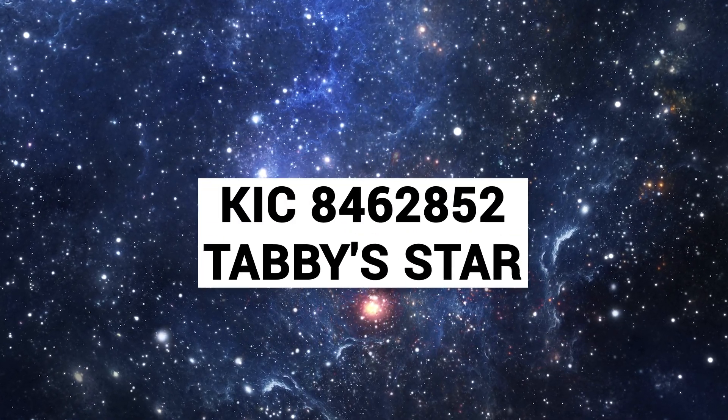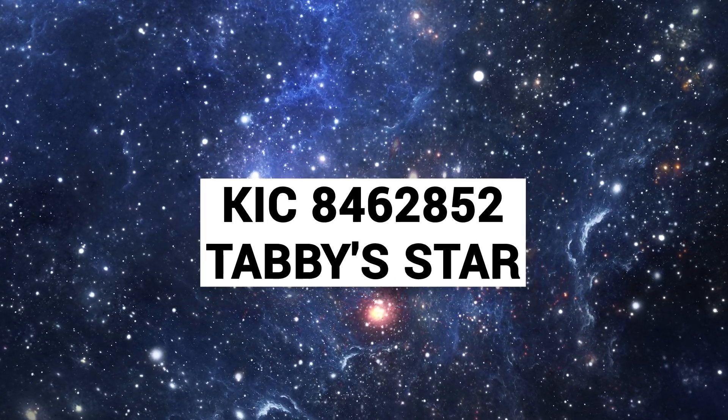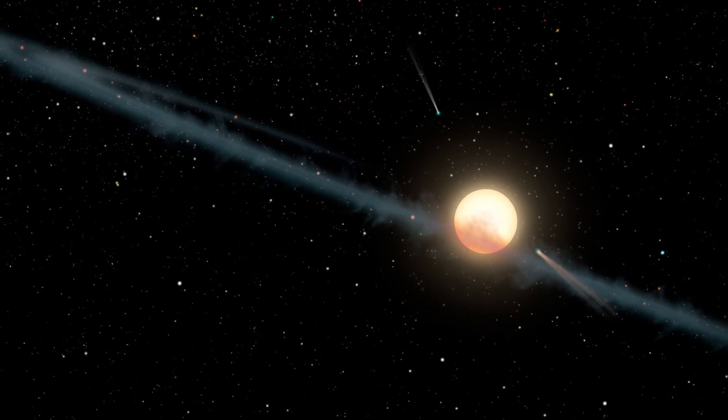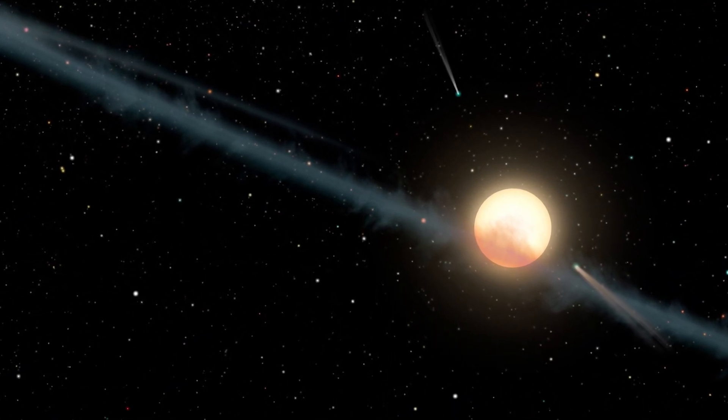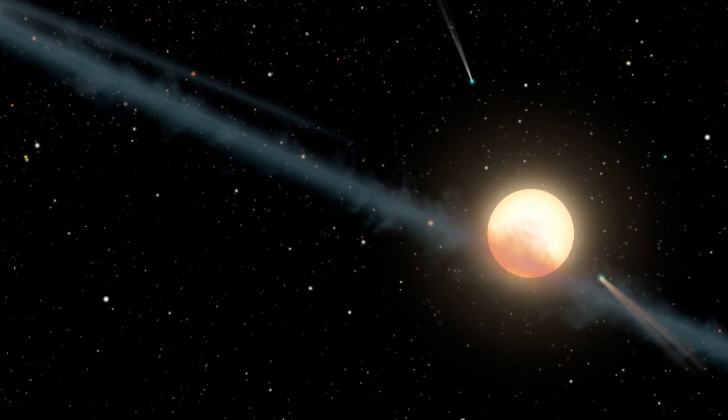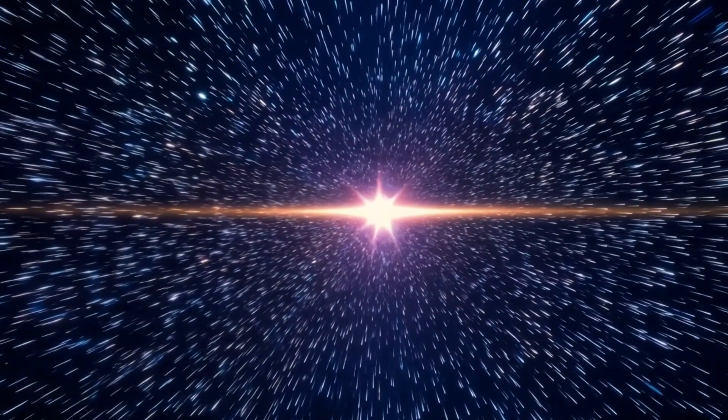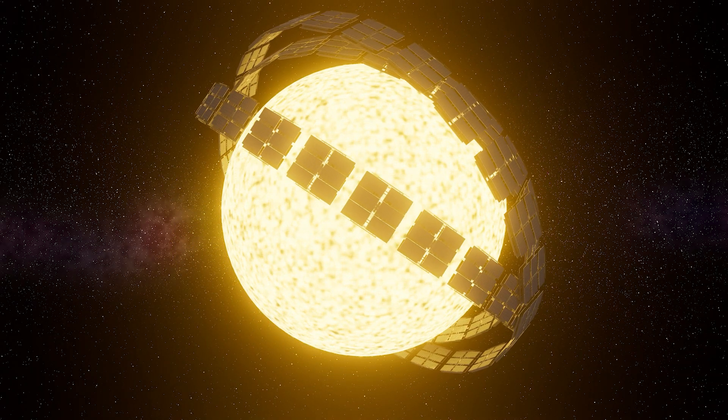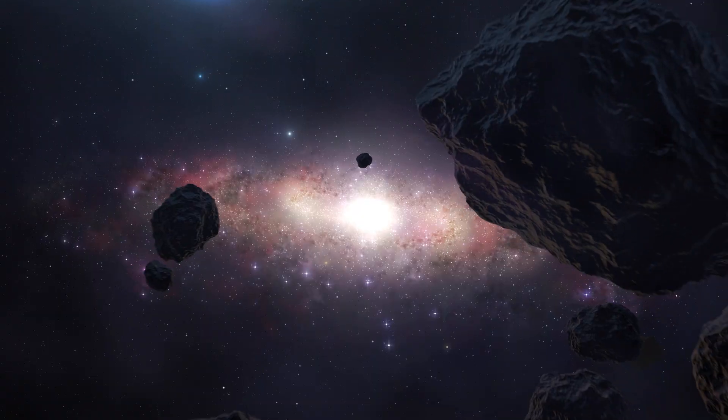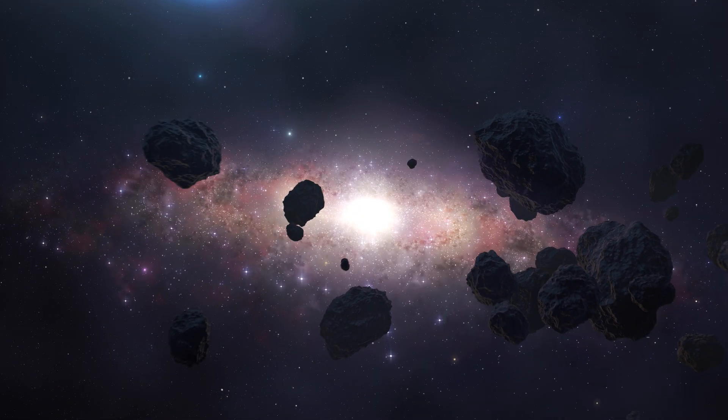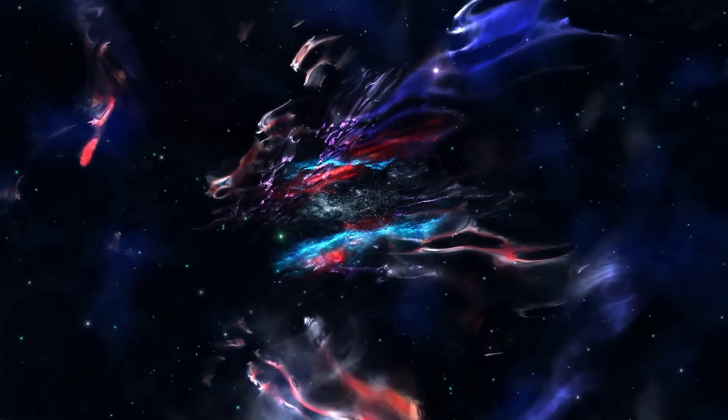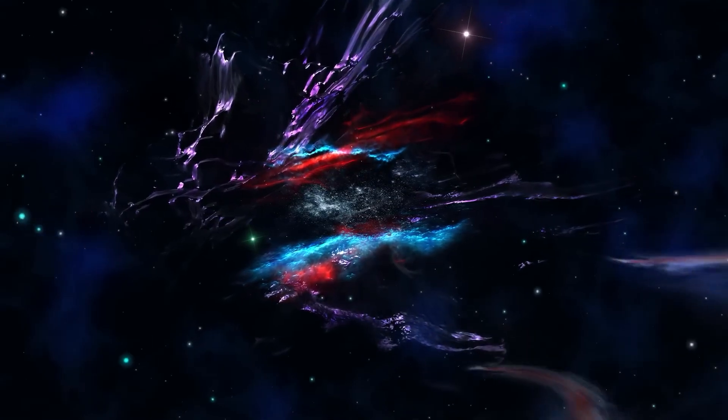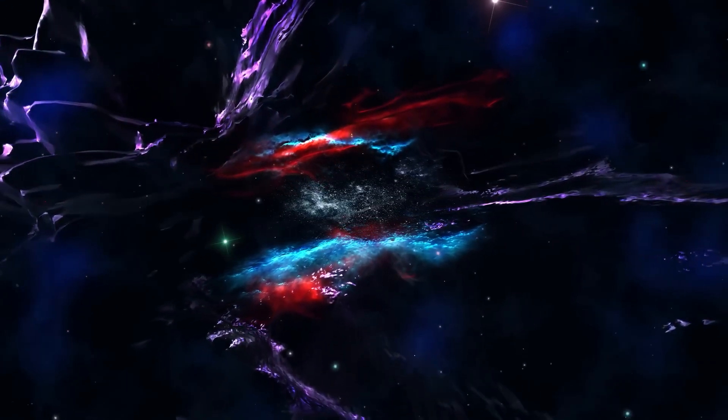The impossible star, KIC 8462852 or Tabby's star. In 2015, astronomers noticed a star called KIC 8462852 dimming in a highly unusual way, sometimes by as much as 22%. Theories range from a massive alien megastructure, like a Dyson sphere, to a swarm of comets or dust clouds. Although a dust cloud is the most widely accepted theory, the strange behavior of Tabby's star continues to baffle scientists, fueling ongoing research.